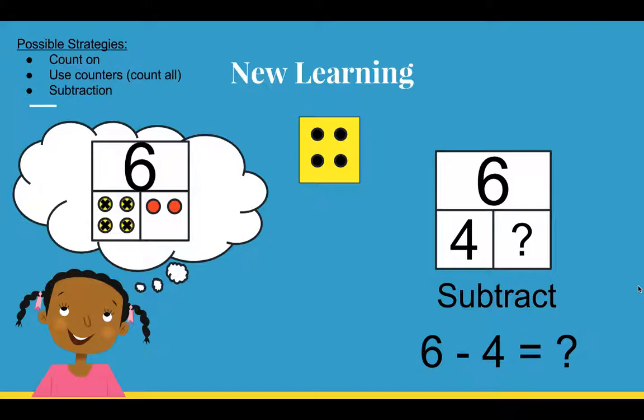So if I put those into the part-part-whole box, the 4 yellow ones are the parts that I already know. The 2 red ones are the ones that's left after I take those away, which means if I know that 4 is one part, the missing part is 2. 4 and 2 make 6.